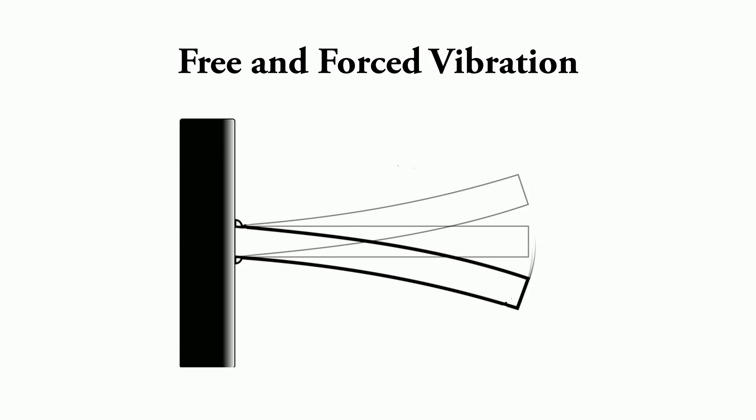If a system, after an initial disturbance, is left to vibrate on its own, the resulting vibration is known as free vibration. If a system is subjected to a repeating type of external force, the resulting vibration is known as forced vibration.